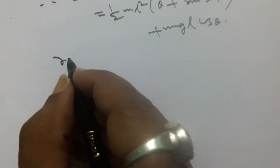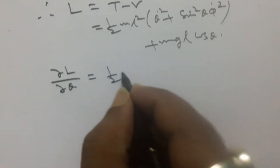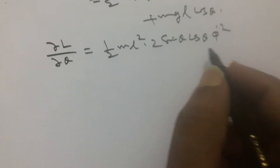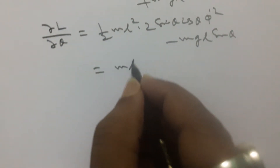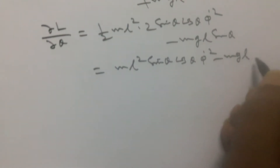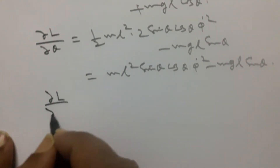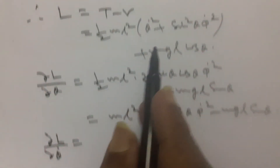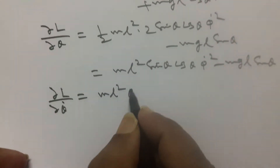Now we calculate ∂L/∂θ. The second term is considerable: half mL squared times 2 sine theta cos theta times phi-dot squared, minus mgl sine theta. So that gives mL squared sine theta cos theta times phi-dot squared minus mgl sine theta. And ∂L/∂θ̇, from the first term, gives mL squared theta-dot.